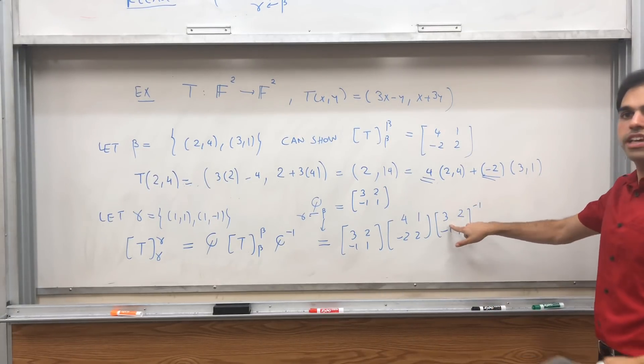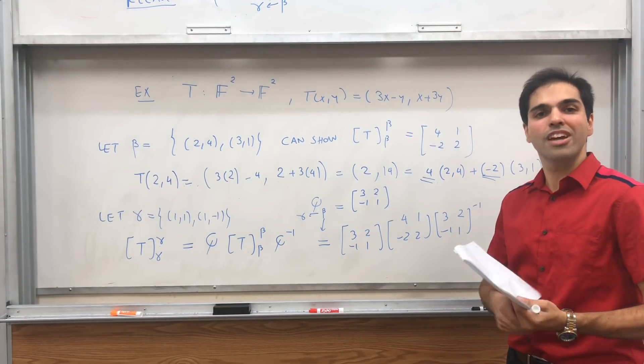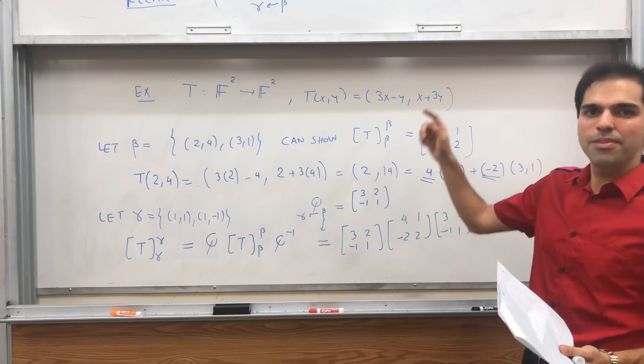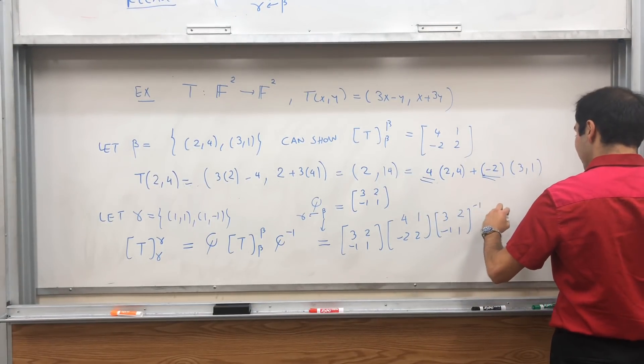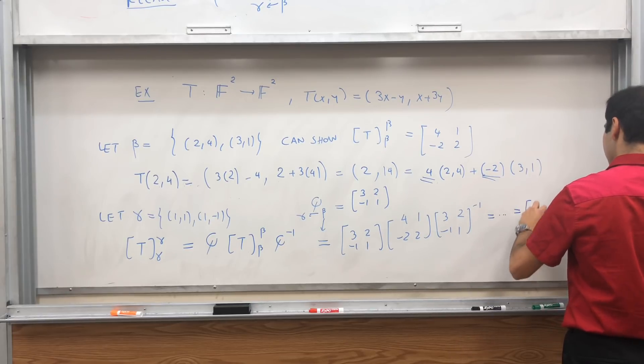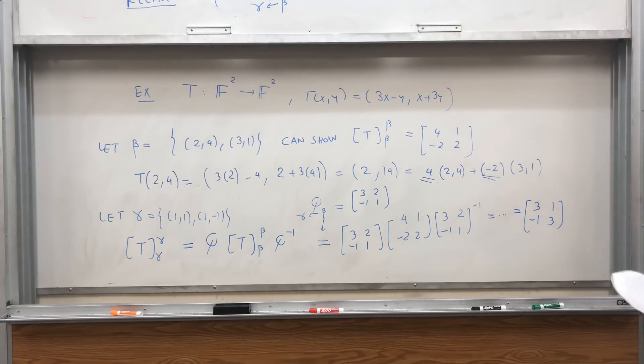This inverse you can calculate, the inverse of ABCD is 1 over AD minus BC times D, -B, -C, A. And if you do this whole junk, you get 3, -1, 1, 3. And this is the new matrix of T.